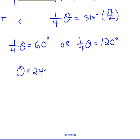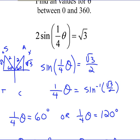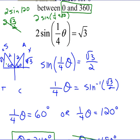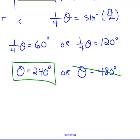So our only solution is θ = 240°. The period here is 4 × 360 = 1440, so adding one period to 240° goes way beyond 360. We don't need to look for additional solutions. Our one and only answer from 0 to 360 is 240°.